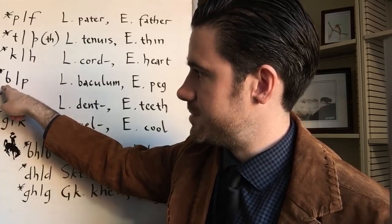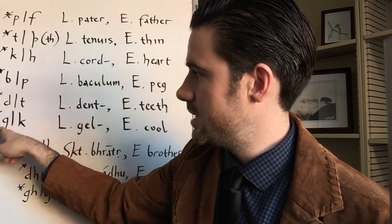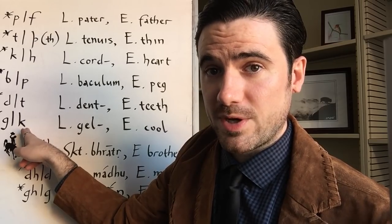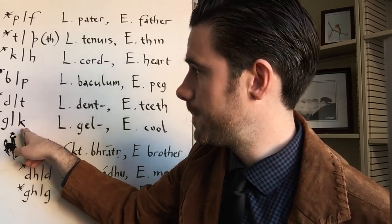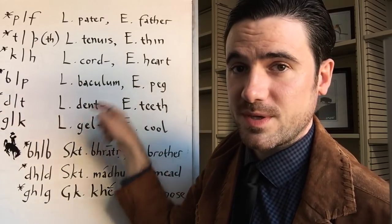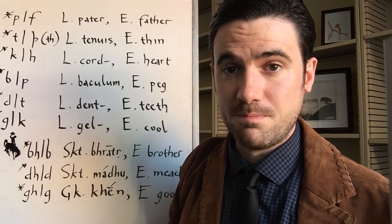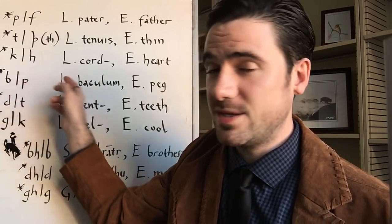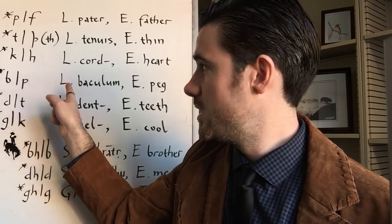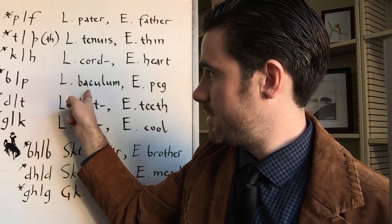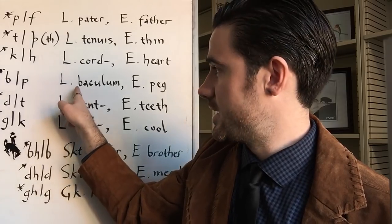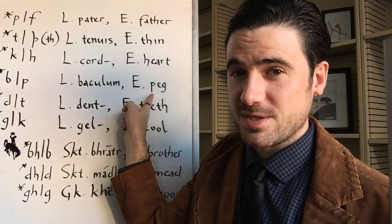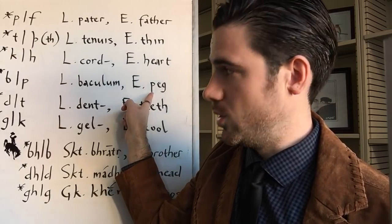Another series of changes includes B to P, D to T, and G to K. In linguistics terms, voiced stops become homoorganic voiceless stops. This one is hard to find examples of because there's actually extremely little B in Proto-Indo-European for whatever reason. That means that P is pretty rare in early Germanic languages. So a weak example that I have dug up is Latin baculum, which is cognate with English peg, but I think even English peg is a loan from another Germanic language from older Dutch.